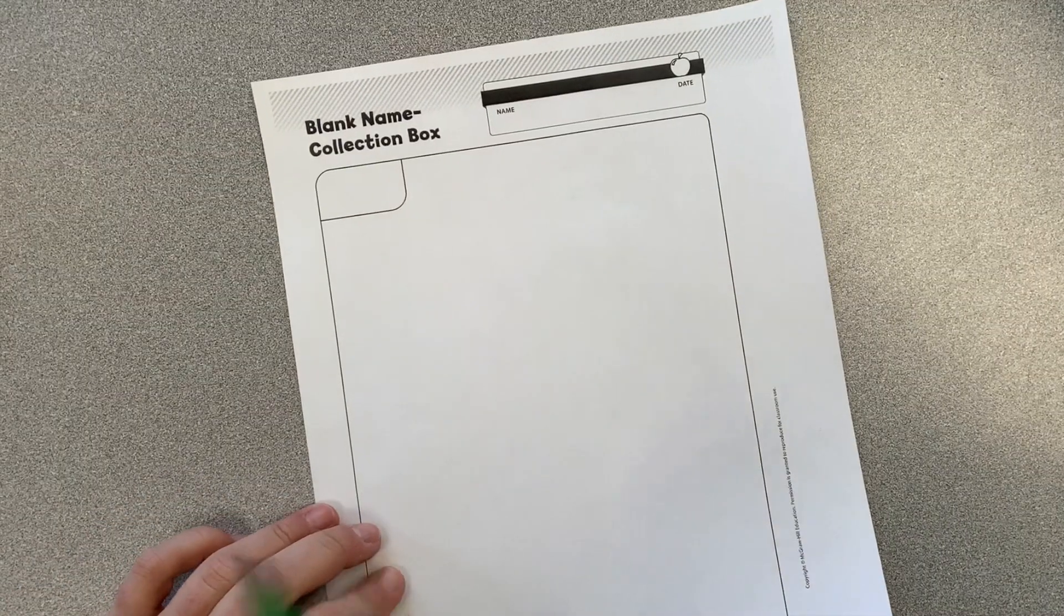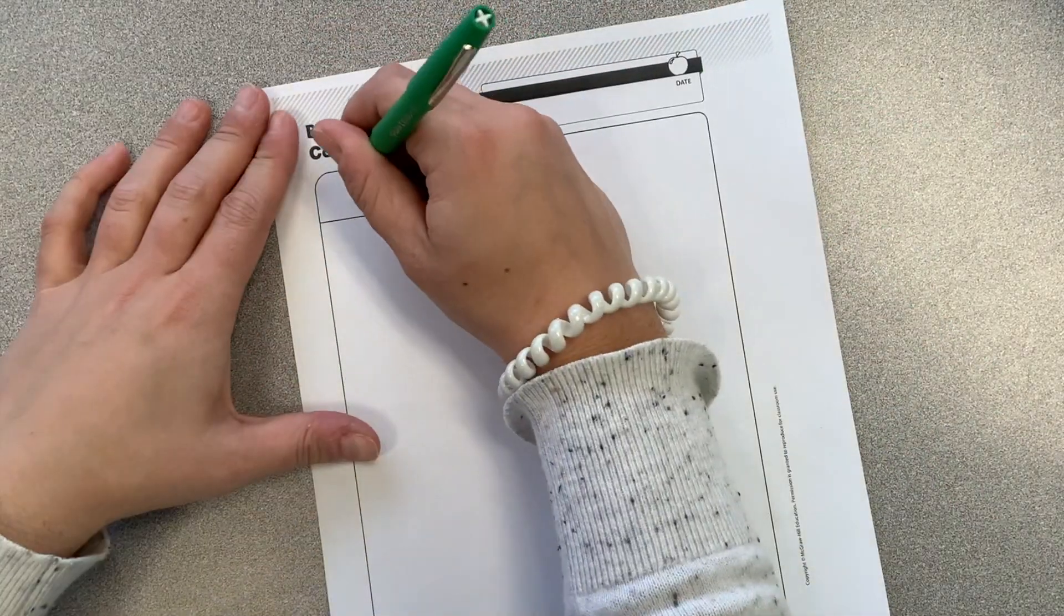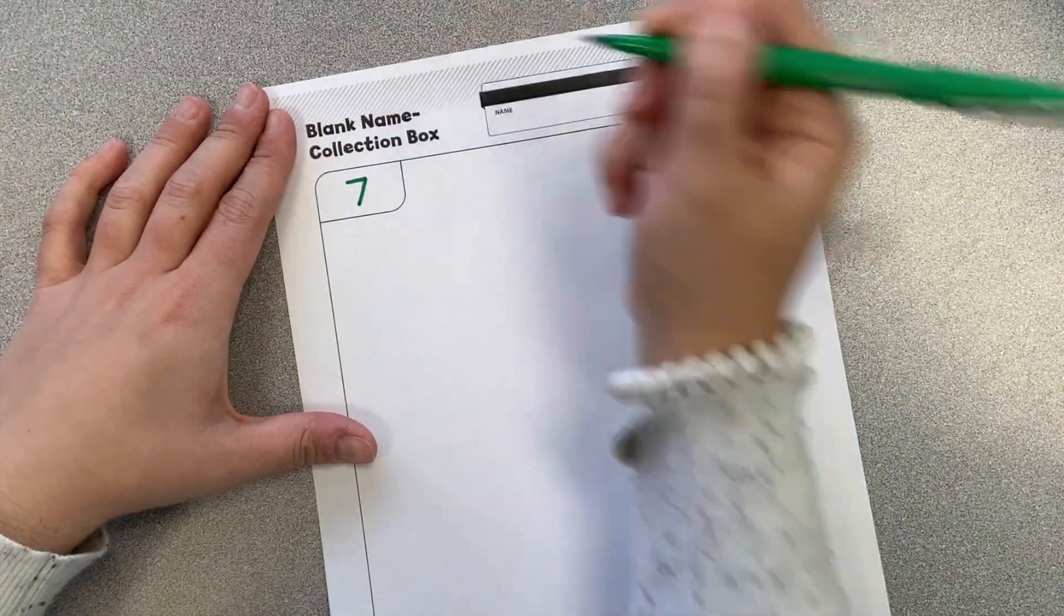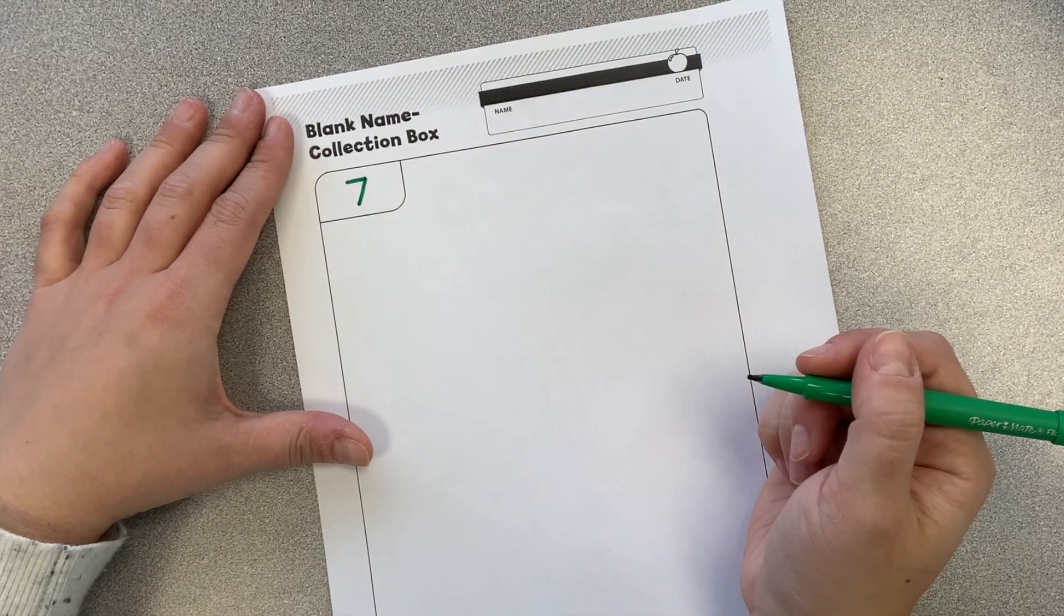Speaking of equivalent names, let's learn how we can fill out a name collection box to list all the different ways to refer to a number. In this name collection box, I'm going to write the number in the small box in the corner. I'm sticking with my pal seven.